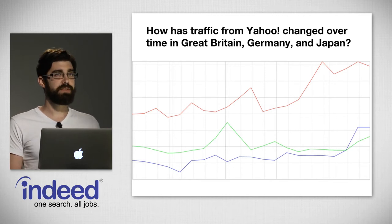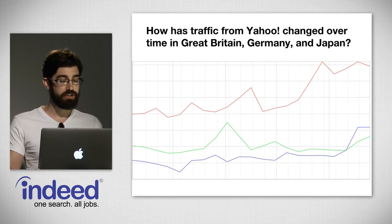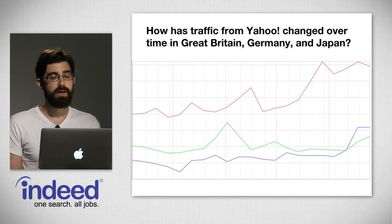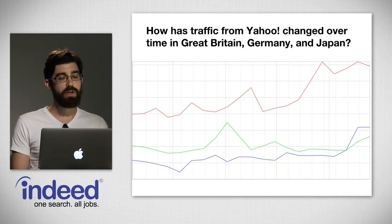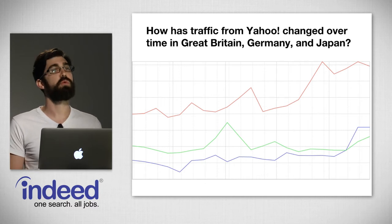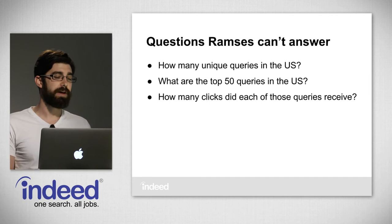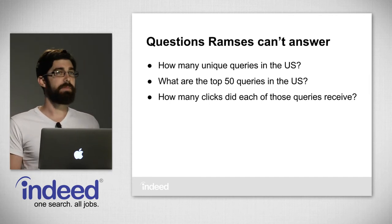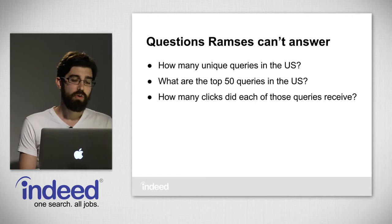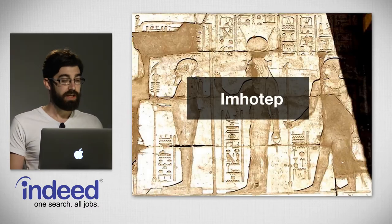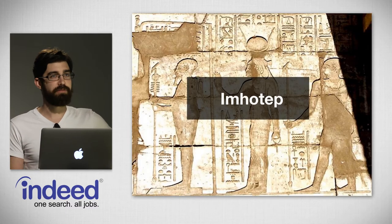But there were some things Ramses just wasn't designed to do. For example, Ramses couldn't answer questions like: how many unique queries do we have in the US? Or what are the top 50 queries in the US? Or how many clicks did each of those queries receive? So in order to answer these questions, we built a new tool called Imhotep — and he is the guy on the far right there.